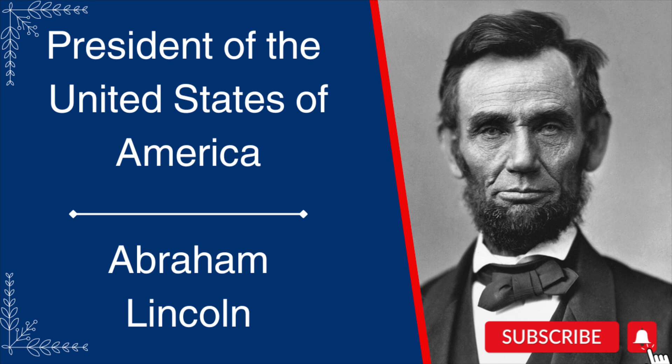Lincoln, a moderate Republican, had to navigate a contentious array of factions, with friends and opponents from both the Democratic and Republican parties. His allies, the War Democrats and the Radical Republicans, demanded harsh treatment of the Southern Confederates. Anti-war Democrats, called Copperheads, despised Lincoln, and irreconcilable pro-Confederate elements plotted his assassination. He managed the factions by exploiting their mutual enmity, carefully distributing political patronage, and by appealing to the American people.